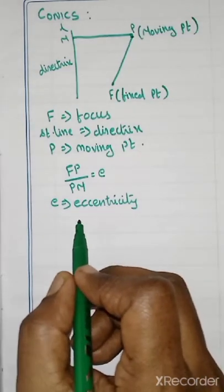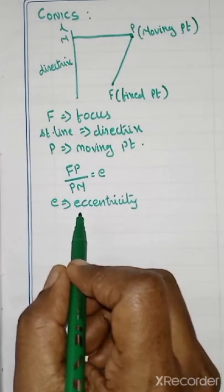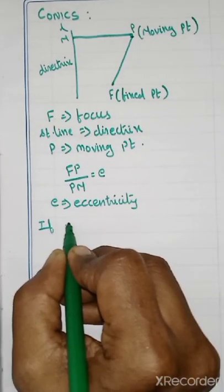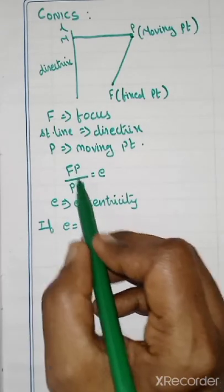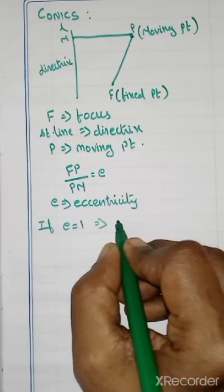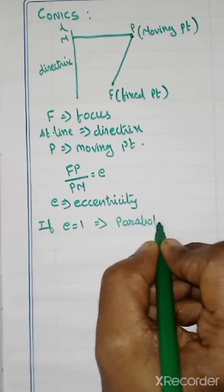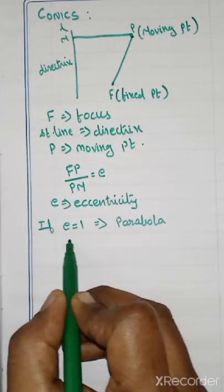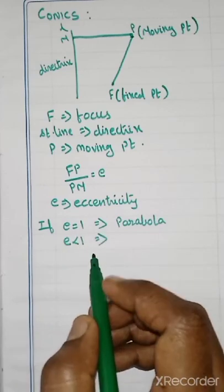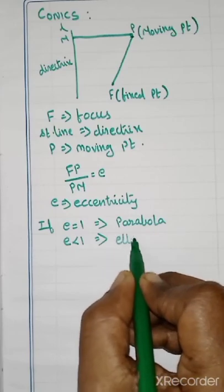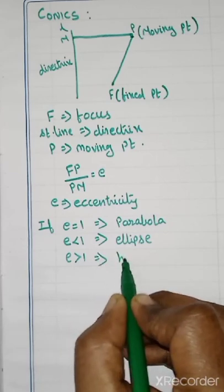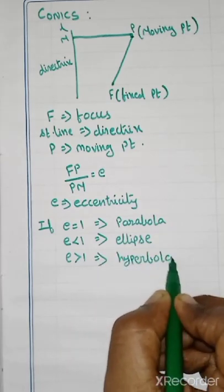We have three types of conics: parabola, ellipse, and hyperbola. If E equals 1, then FP by PM equals 1 and it is called a parabola. If E is less than 1, that conic is called an ellipse. If E is greater than 1, that conic is called a hyperbola.